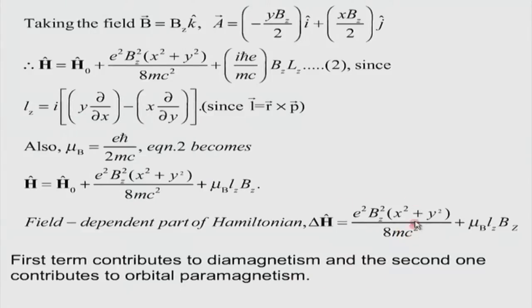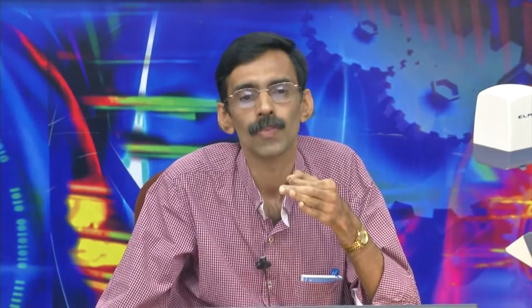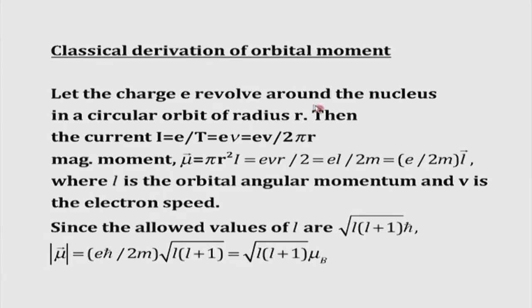The derivation comes from pure hydrogen atom quantum mechanics — very elementary quantum mechanics of the hydrogen atom gives you all these ideas. One can also do a classical derivation of the orbital magnetic moment, even though quantum mechanics is essential. In many situations, a pure classical method also works with certain approximations. In the classical picture: a charge revolves around the nucleus in a Bohr-type orbit of radius r. The current is given by e/T, where T is the time period, which becomes e·v/(2πr), and v is the electron speed in the orbit.